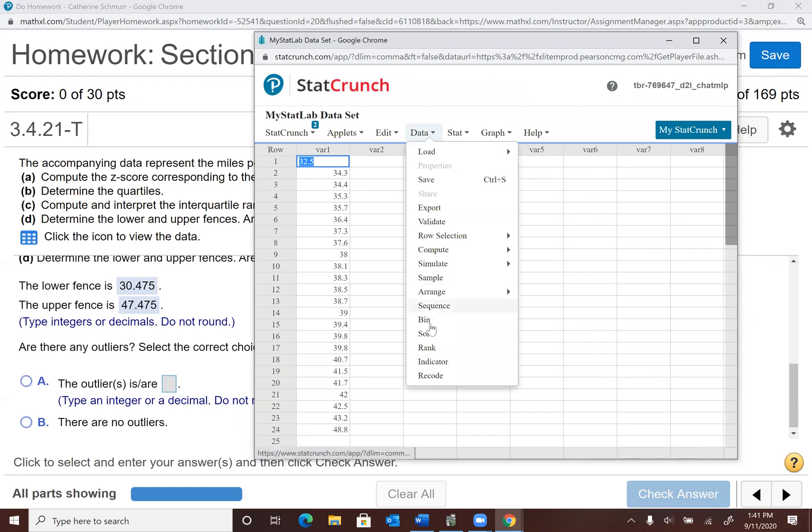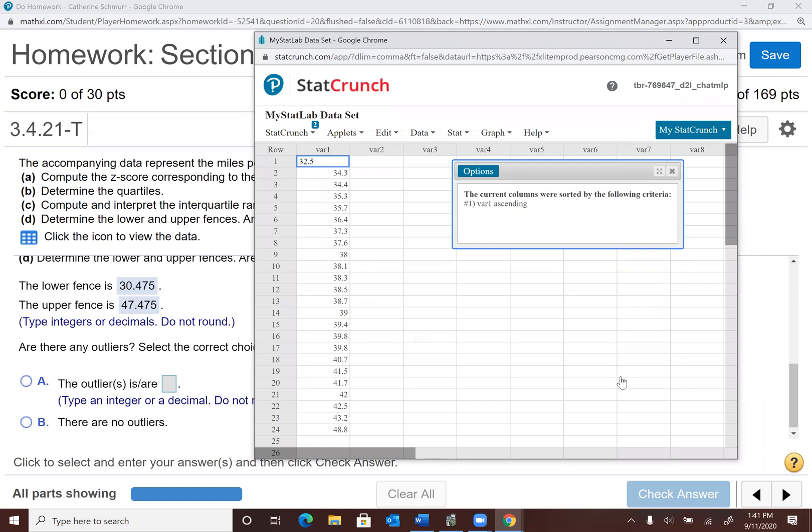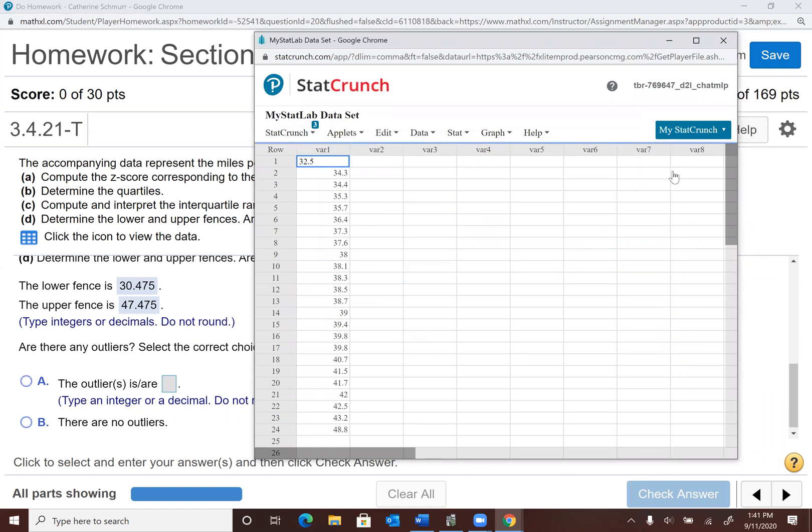So I go to data, sort. I'm going to select column one or variable one. And I'm going to say variable one ascending. Replace the current column. Okay, so now they're in order from smallest to largest. So my first value, my smallest value is 32.5. That is not below the lower fence. So I have no outliers on the lower end. You might have a different result for your problem 11. On the upper end, I have this 48.8. That is above my upper fence. So that is an outlier, 48.8. The next one down is not above my upper fence. So that tells me my only outlier is the 48.8.